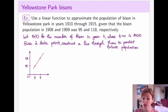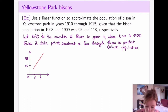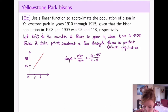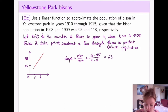For the line I need two pieces of information: a slope and a point. The slope is always rise over run, so I have 118 minus 95 divided by 9 minus 8, which comes out to be 23. So my slope here is 23.